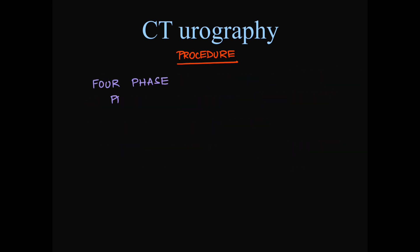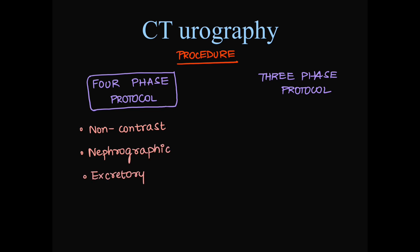While performing CT urography, we can use four-phase protocol or a three-phase protocol. In order to reduce radiation, we can use three-phase protocol. We will see what is four-phase protocol. There is non-contrast sequence which we take. Next, we take a nephrographic phase. Then, we take two excretory phases. So, one is at 5 minutes, one is at 7.5 minutes since this is to concentrate on the urinary tract.